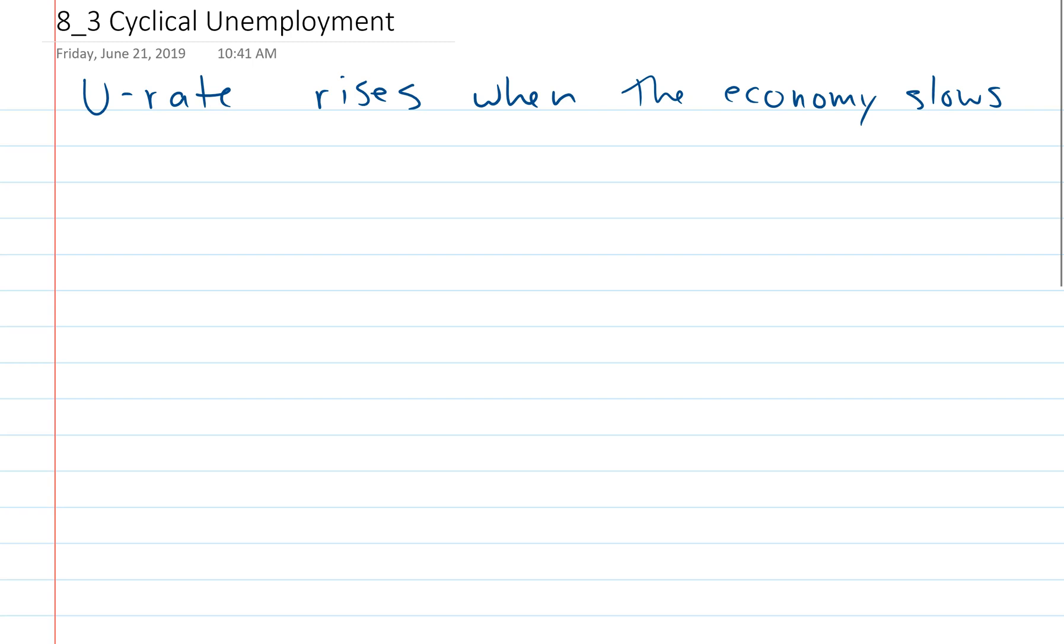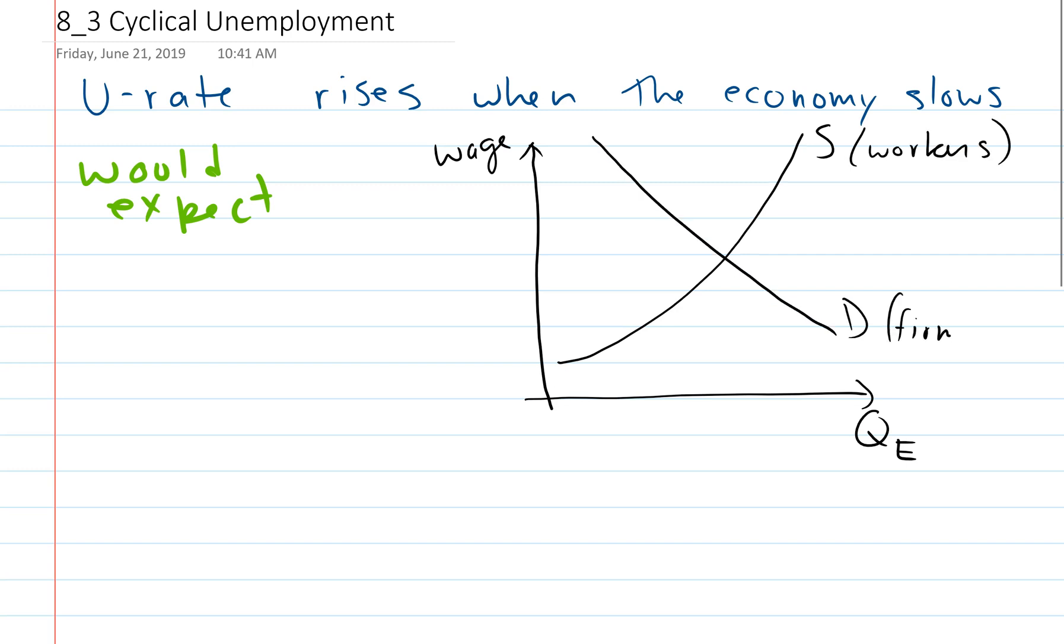Here's what we would expect. Let's use a simple supply and demand model and see what we would expect. Actually, if we use the simplest supply and demand, we wouldn't expect this to happen. So here we've got our wage, and here we have the number of workers that are employed, the quantity employed. We've got a supply curve. The supply curve, this is the workers, and we've got our firms. They want to hire people.